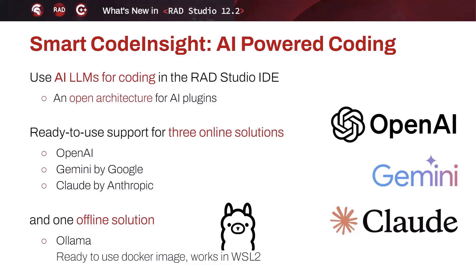Of course, having only the architecture won't be terribly useful. We are also shipping ready-to-use support for three online solutions: the OpenAI API, the Gemini API by Google, and the Claude API by Anthropic. We're also providing one offline solution — offline meaning a solution you can install locally on your machine or a machine in your network.